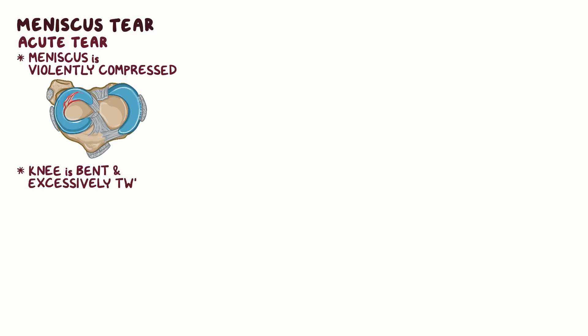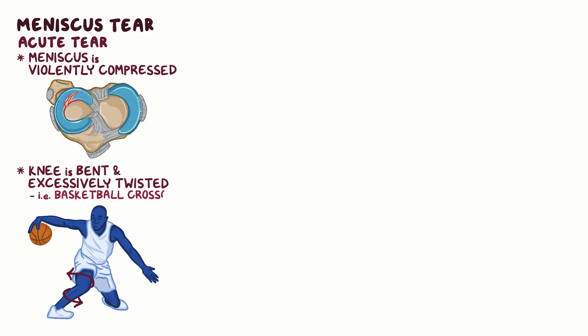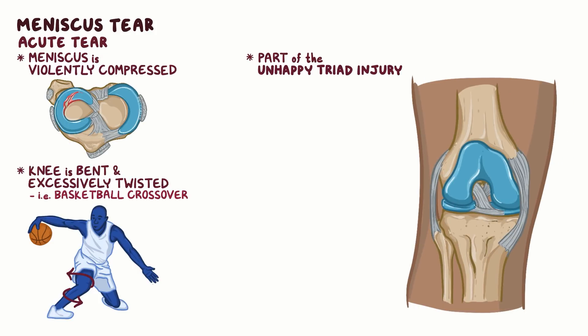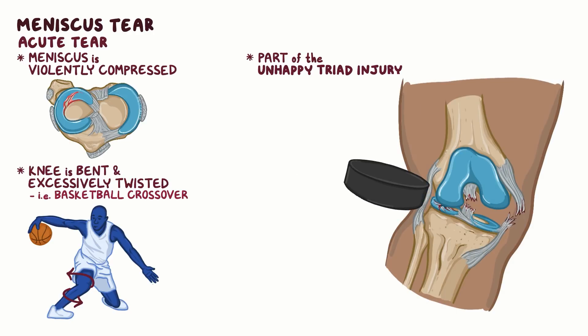A meniscus tear can occur when the meniscus is violently compressed, called an acute tear, which usually occurs in young athletes. Acute tears typically occur when the knee is bent and at the same time excessively twisted, like when playing basketball and suddenly changing direction, trying to cross over another player. Acute meniscus tears can also occur as part of an unhappy triad injury, where a lateral force to the knee — like when the knee is hit by a hockey puck — causes tears in the ACL, MCL, and one of the menisci, usually the lateral.